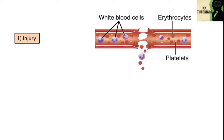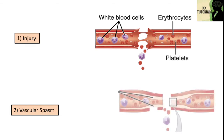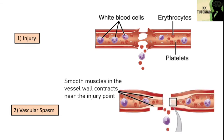The next step is vascular spasm. What happens next is smooth muscles in the vessel wall contract near the injury point, and this reduces blood loss.